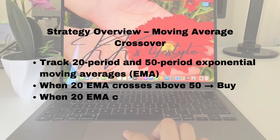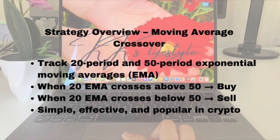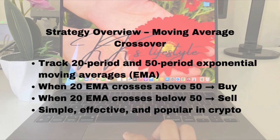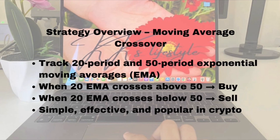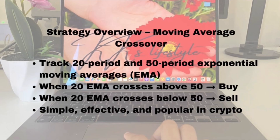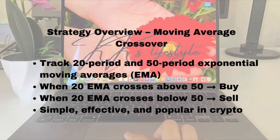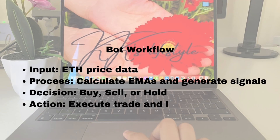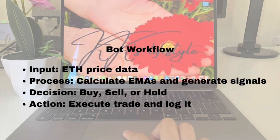Here's how it works. We track two moving averages — a 20-period and a 50-period exponential moving average. When the 20 EMA crosses above the 50 EMA, that's a signal to buy. When it crosses below, that's a signal to sell. It's a simple strategy, but it's widely used and effective, especially in crypto. The bot takes in ETH price data as input, calculates the two EMAs, and generates buy or sell signals. After that, it decides whether to buy, sell, or hold, then executes the trade and logs the results for tracking.